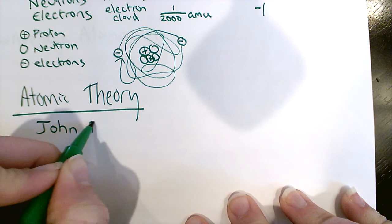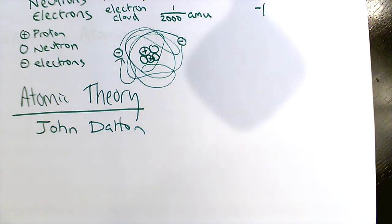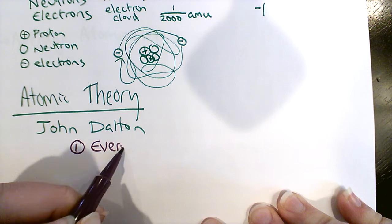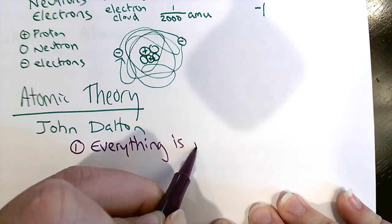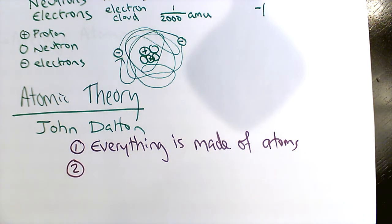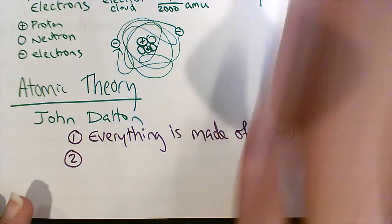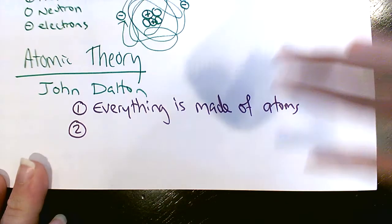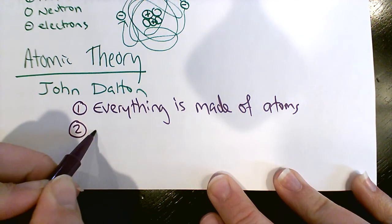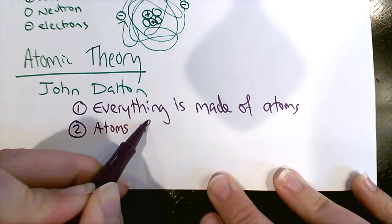Topic three: atomic theory. The only name you need to know is John Dalton - he's the guy who officially proposed atomic theory. A couple of key ideas: first, everything is made of atoms. It doesn't matter if it's a solid, liquid, gas, something we eat, or something that grows from the ground - everything is made of atoms. This was a pretty revolutionary idea.